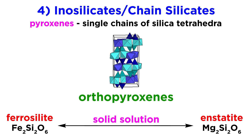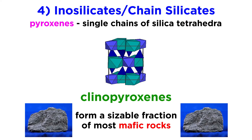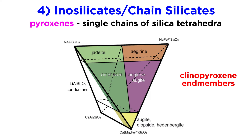The orthopyroxene group only has two endmembers — the iron-rich ferrosilite and magnesium-rich enstatite — with complete solid solution between them. The clinopyroxenes are more diverse and widespread, forming a sizable fraction of most mafic rocks. Like orthopyroxene, there is extensive solid solution among the clinopyroxenes. Some endmember clinopyroxenes are the calcic-magnesium-rich diopside and iron-rich hedenbergite, the sodic-aluminum-rich jadeite, iron-rich aegirine, and the lithium-bearing spodumene.